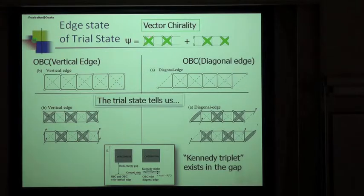What is a Kennedy triplet? We consider the two kinds of boundaries, open boundary. One is a vertical one, and the other is a diagonal one. The trial state depicted here tells us that the Kennedy triplet exists in the gap only in the diagonal edge case.